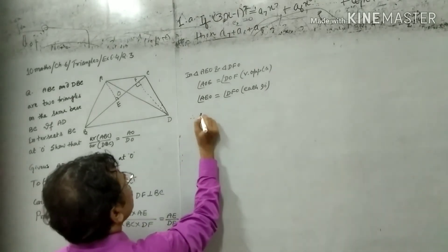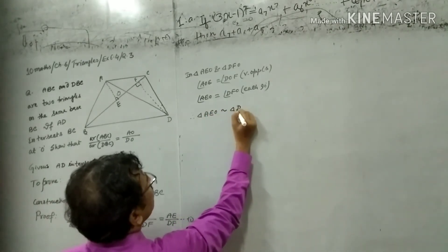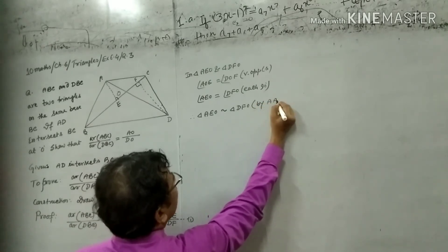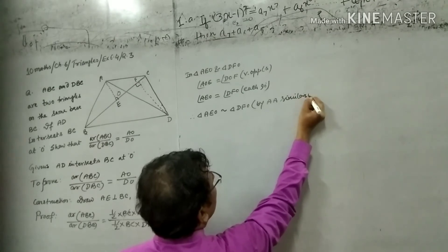Therefore, triangle AEO similar to triangle DFO by angle-angle similarity.